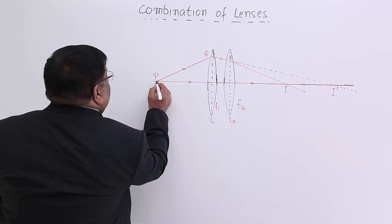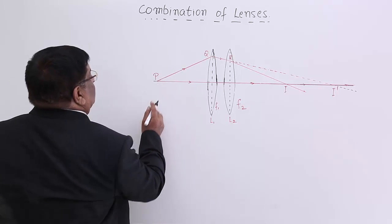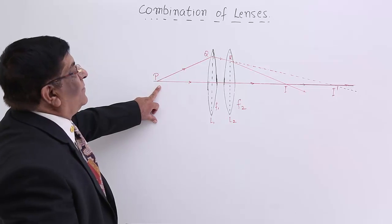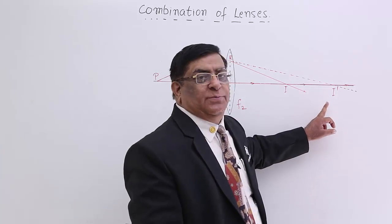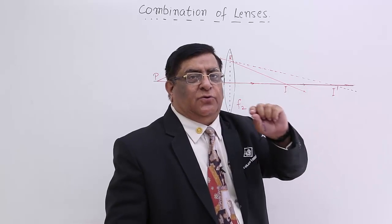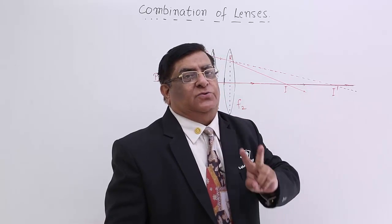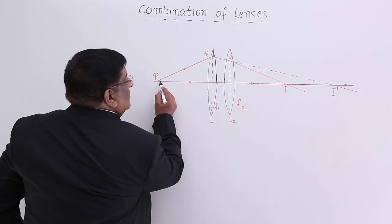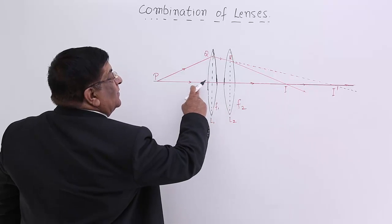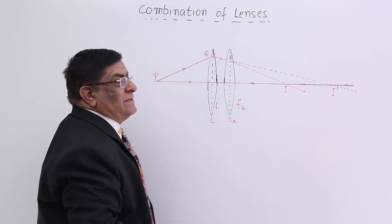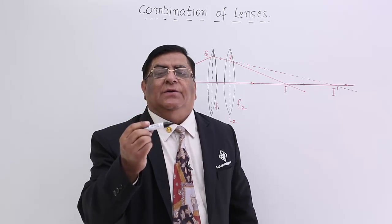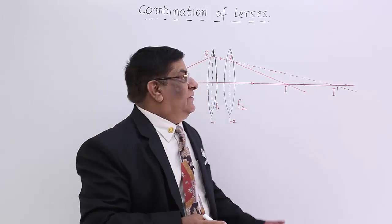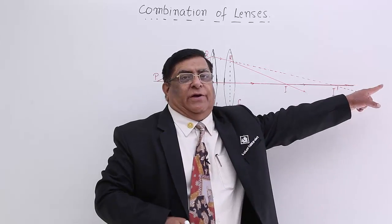We take a source here — P is a point where the source is placed. From here, we want to find out where the image is formed. To do this, we take two rays coming from the point. One ray we take along the principal axis, which is a common principal axis. On the principal axis there is no deviation, so the ray goes straight without deviation.